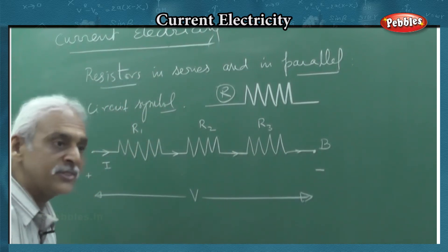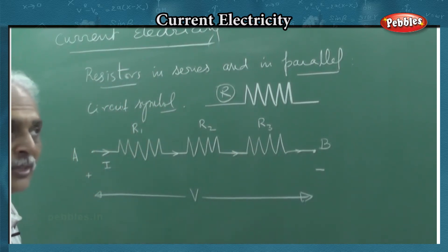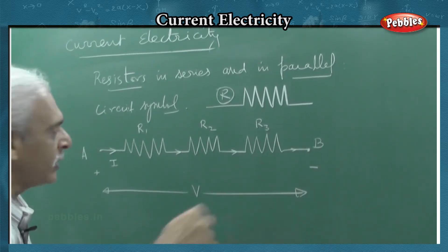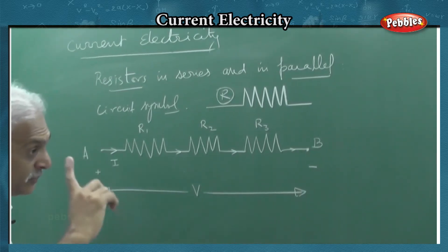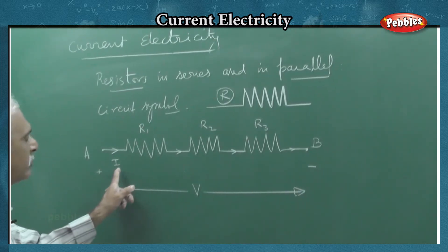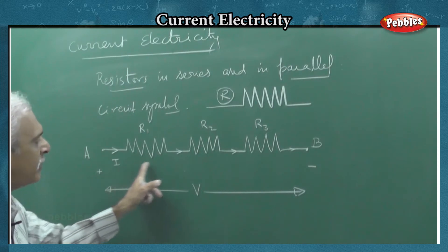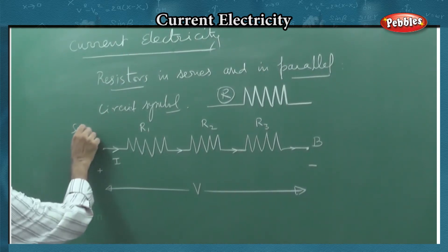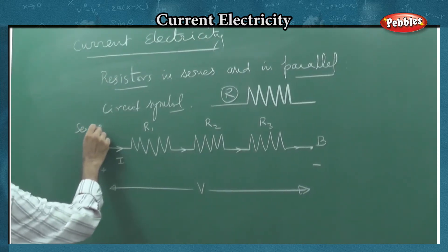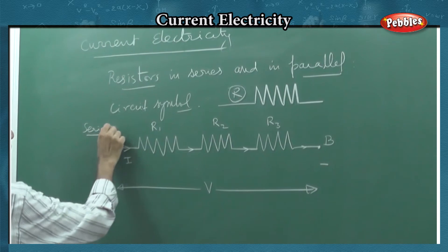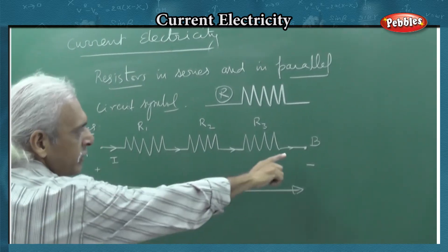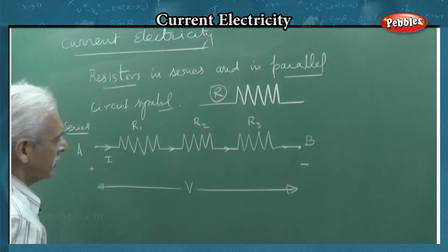In a series combination, every element carries the same current — just as in series capacitors the same charge lies on each capacitor, so therefore the same current flows. This is the series combination. In a series combination, current is the same in all the resistors.